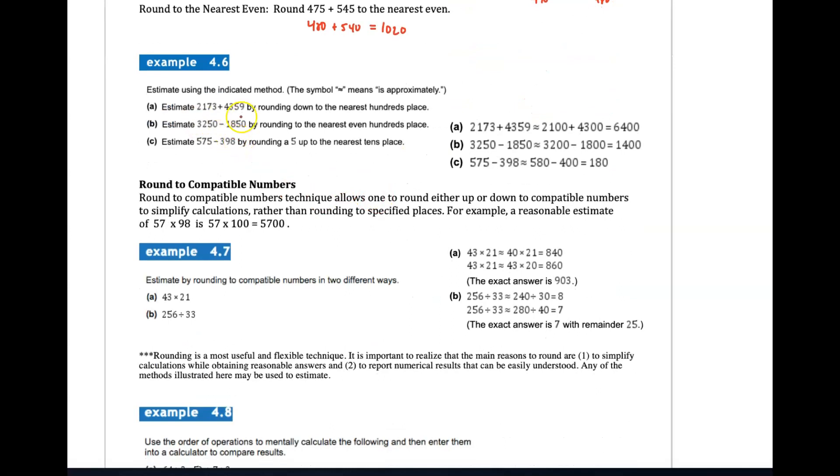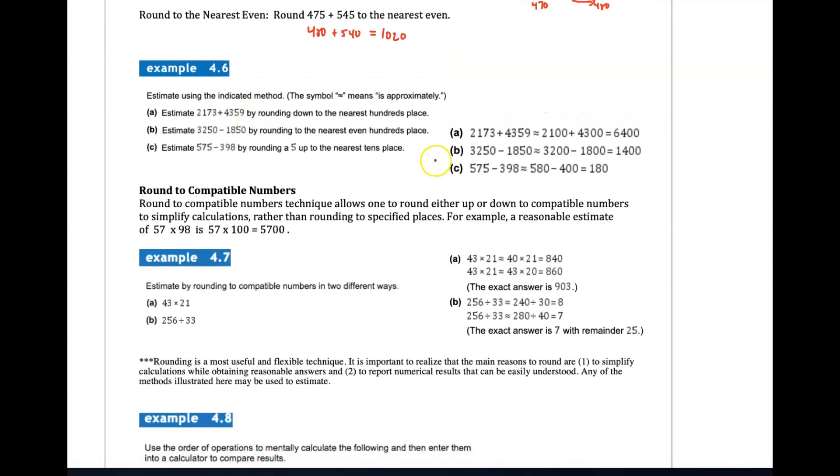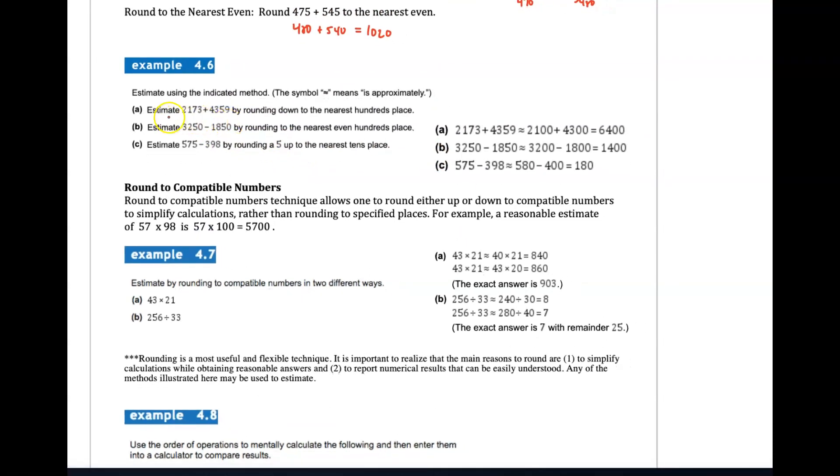You have all these other examples—I have the solutions here. You should also read the book, which I recommend, in terms of how we estimate these. Rounding down to the nearest hundred place, rounding to the nearest even hundreds place—just follow the instructions, round by rounding a 5 up to the nearest 10 place.